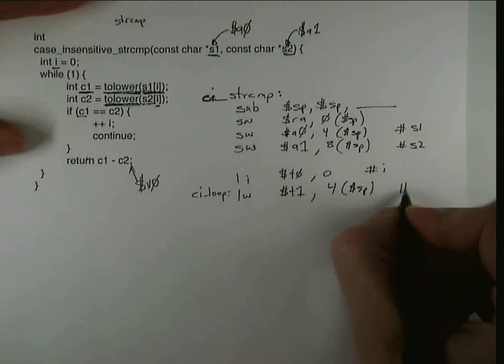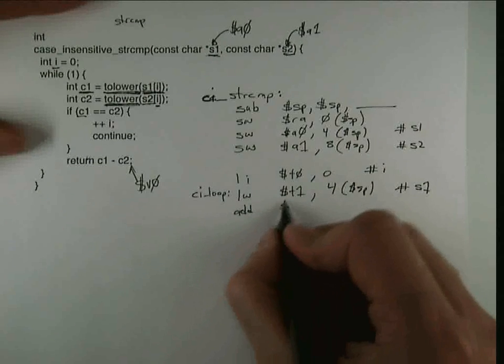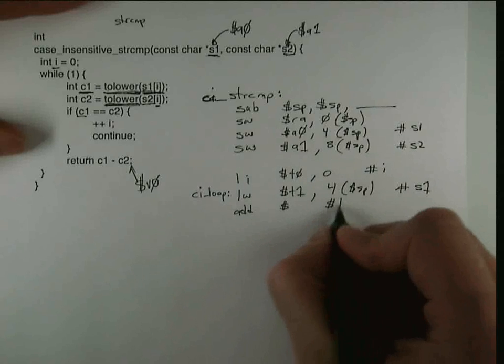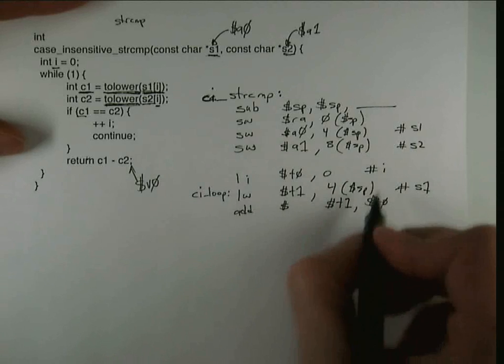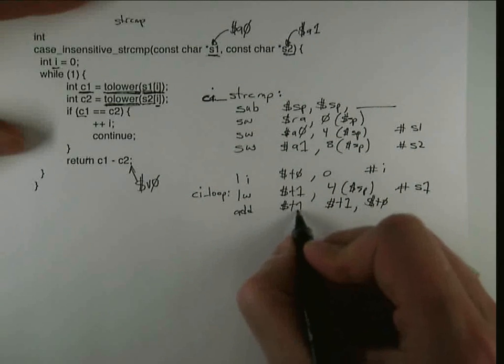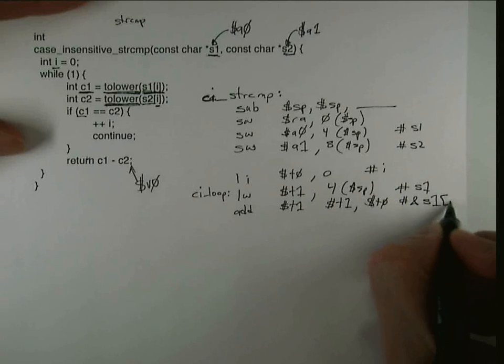So that gets me S1, and then I can add this T1 with T0, which is I, and that gets me the address of S1[I].